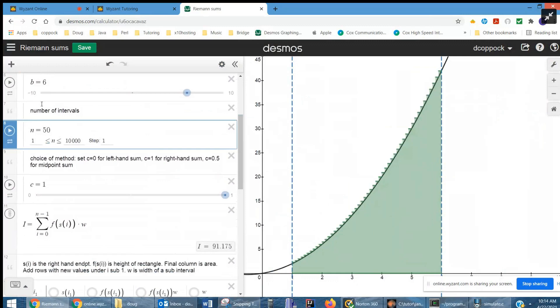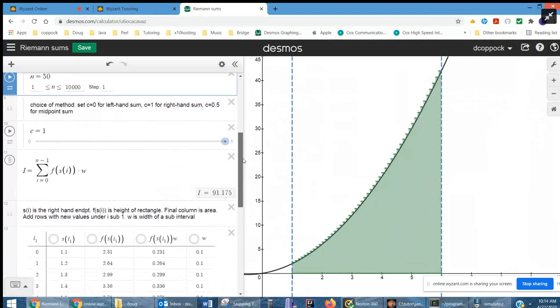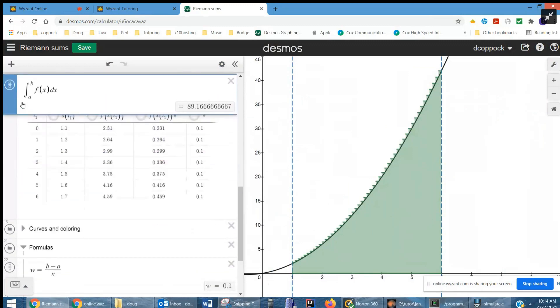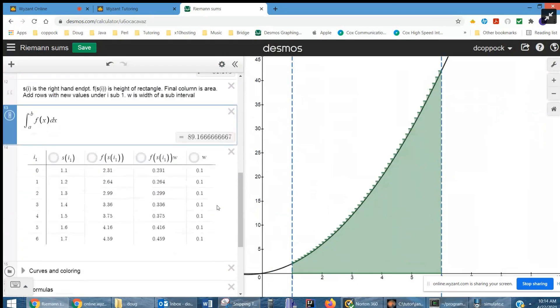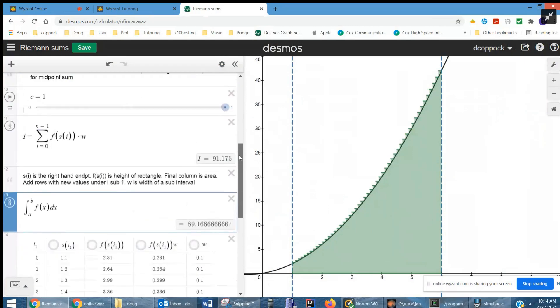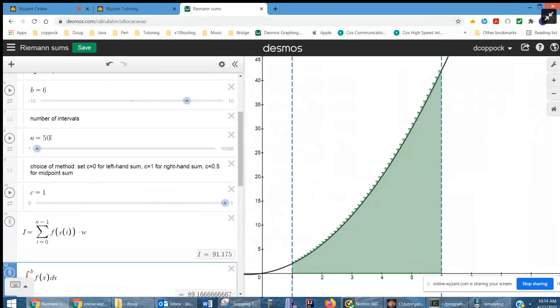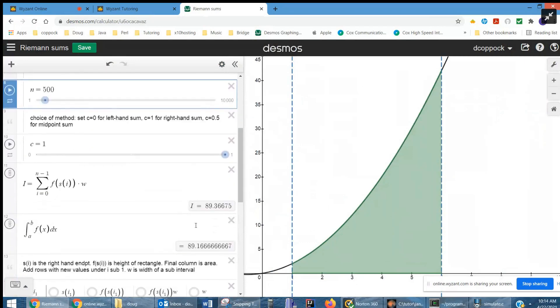I change this to 50. I've got 91.175. And down here, let me move this up here. Right here, there's the actual value. And if I increase the number of rectangles to 500, I'll get even closer to the actual area. More rectangles, the closer we get to the actual area.